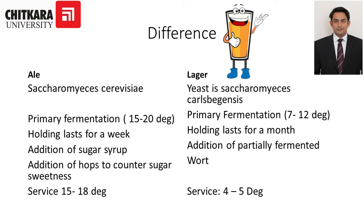Addition of sugar syrup is allowed in ales, while addition of partially fermented wort is done in lagers. Extra hops are added in ales to counter the sugar content, but in lagers only a certain amount of hops are added. The service temperature of ale beer is around 15 to 18 degrees Celsius, and the service of lager beers is done at around 4 to 5 degrees Celsius.